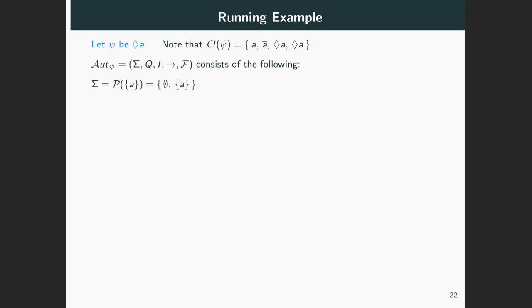The associated automaton has the following components. Its alphabet is the power set of the set of atoms, so here it consists of the empty set and the singleton set containing the atom A.